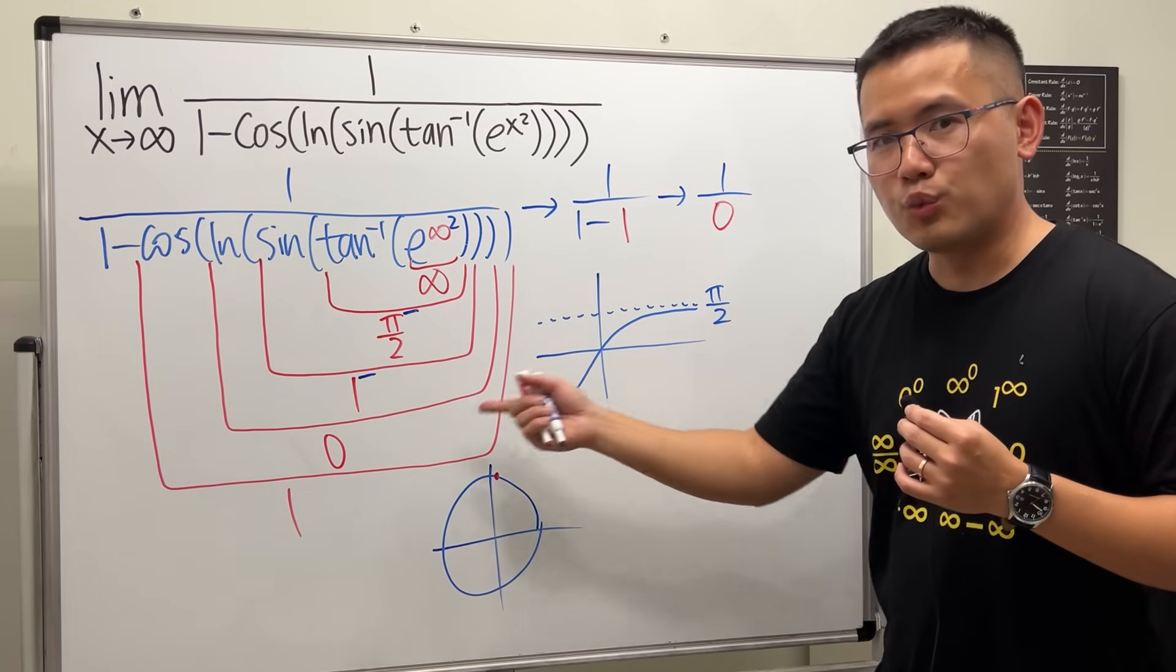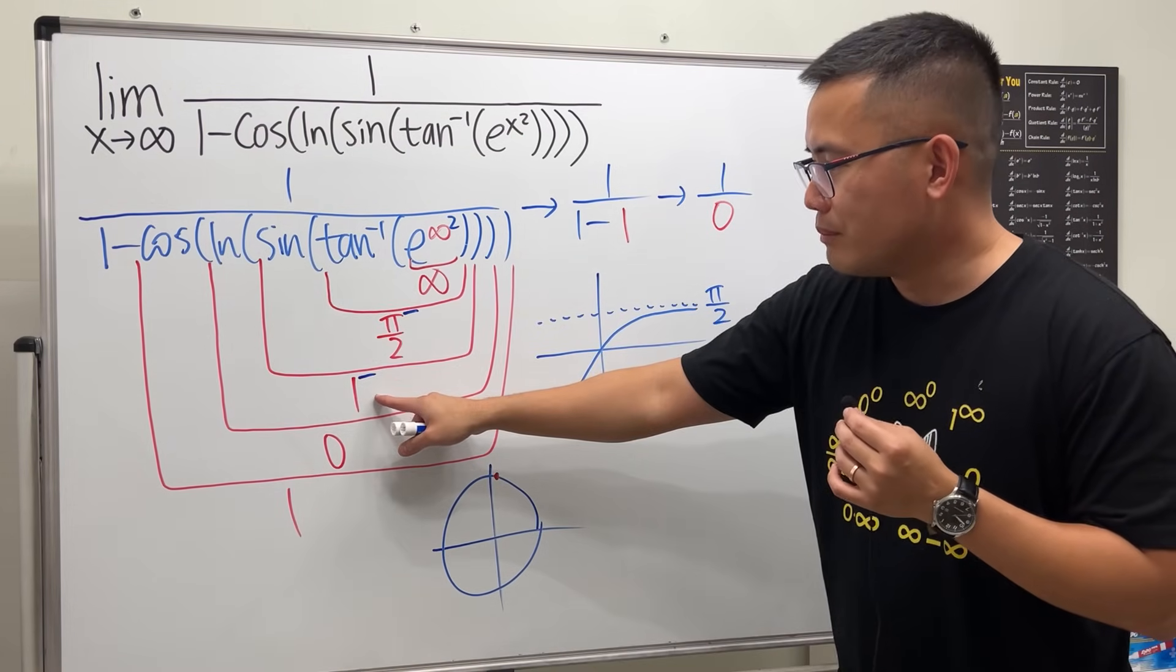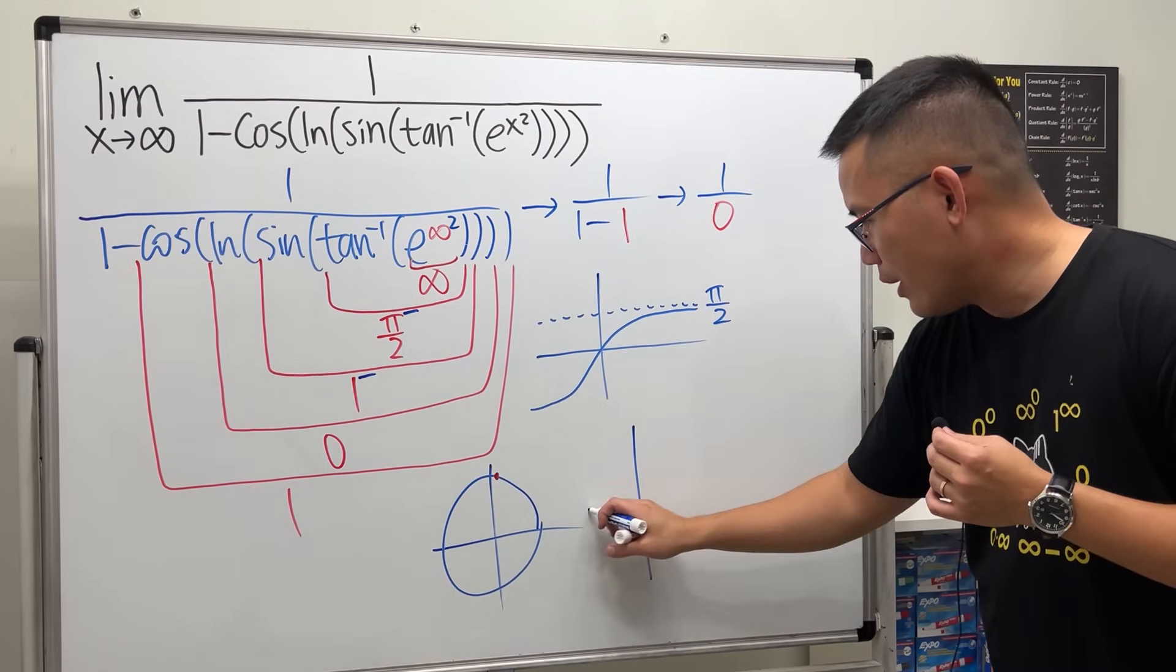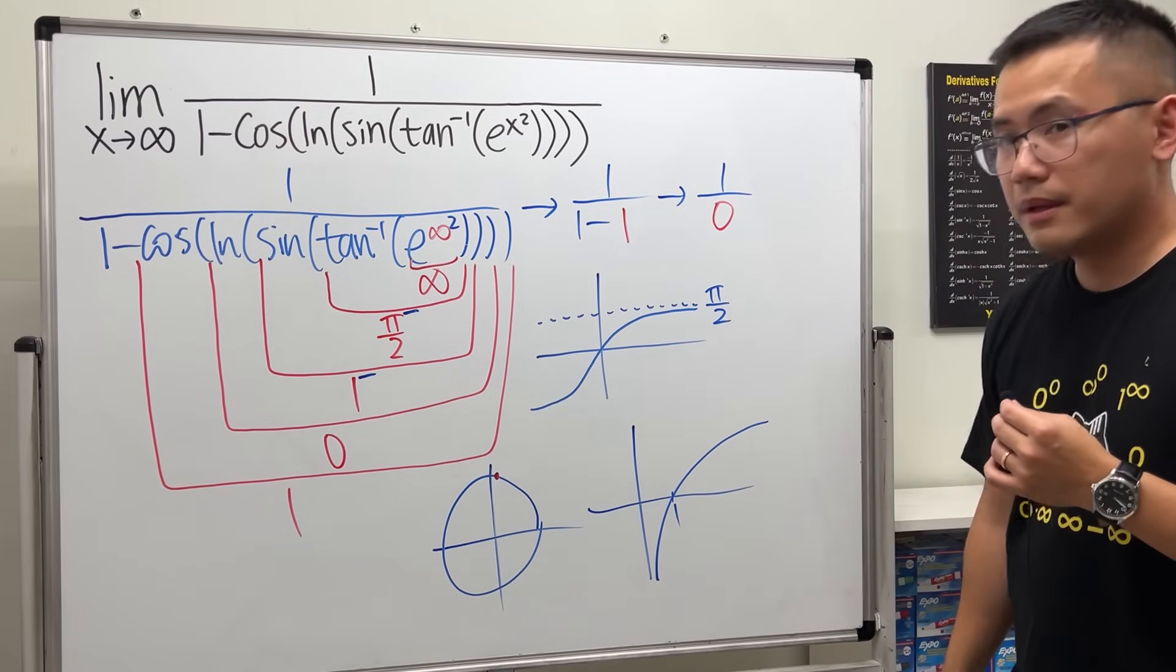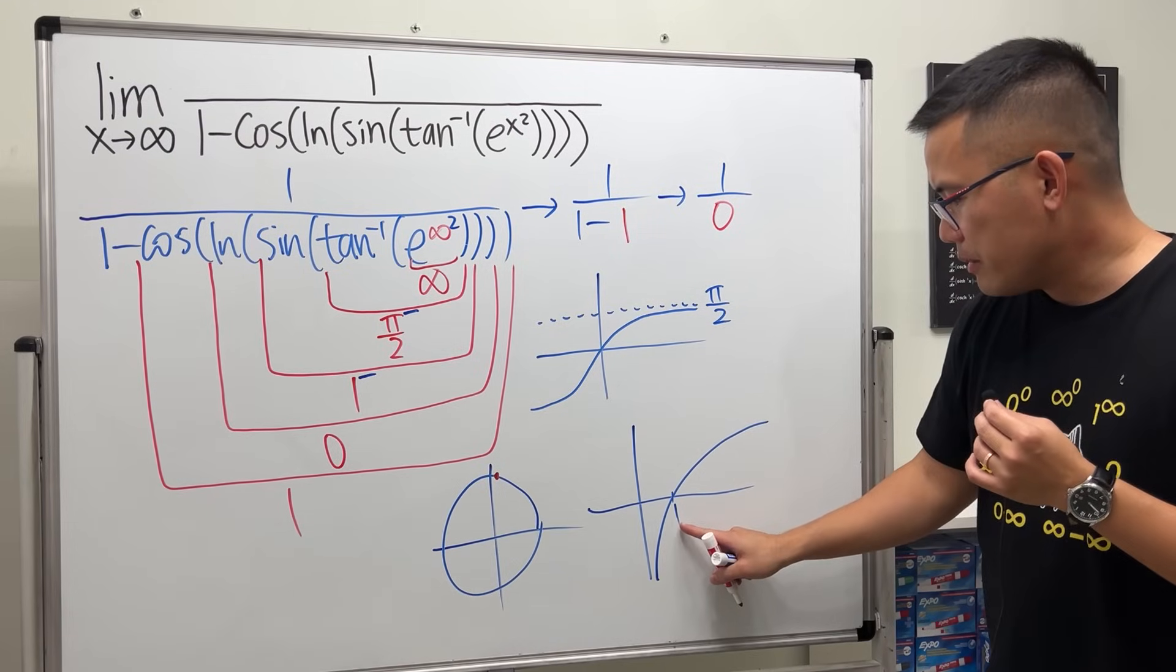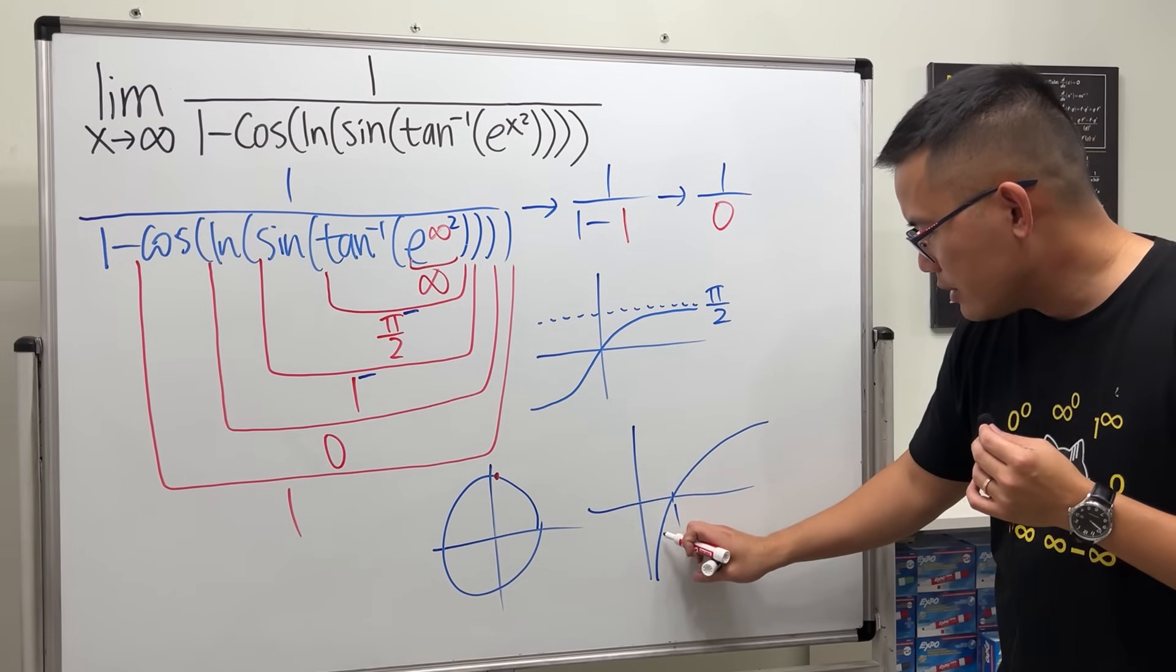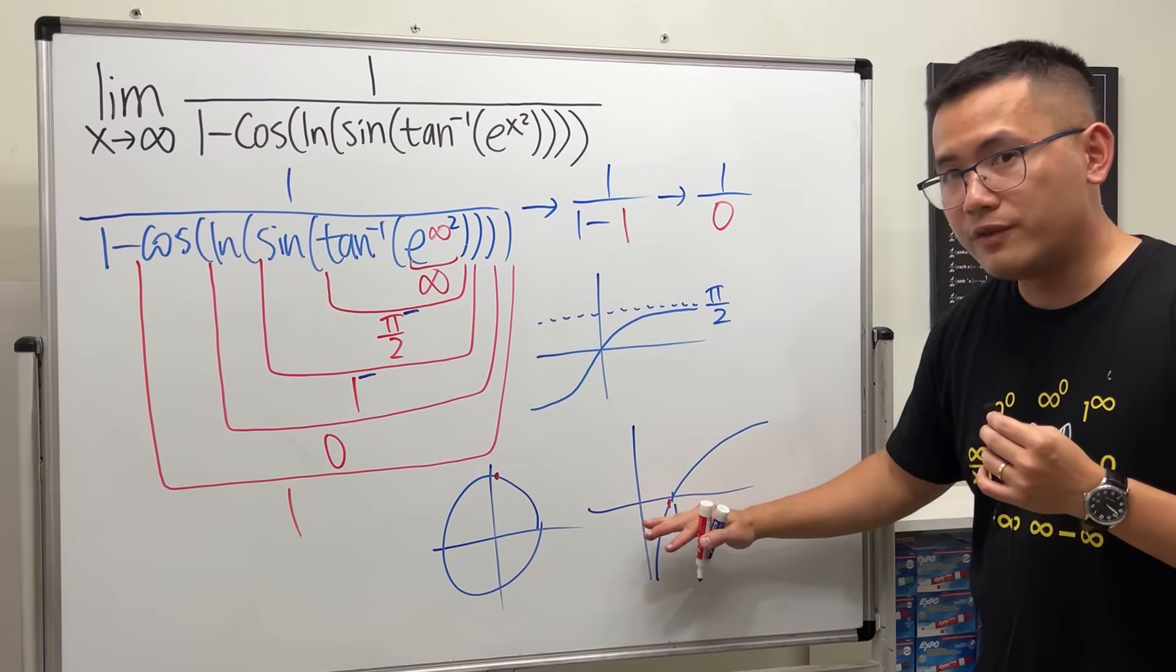And then ln of 1 minus—let's have a look. ln looks like this, here is the 1, and 1 minus means we are coming toward 1 from the left-hand side. So it's approaching 0, the y value, but it's from the bottom. So this is 0 minus.